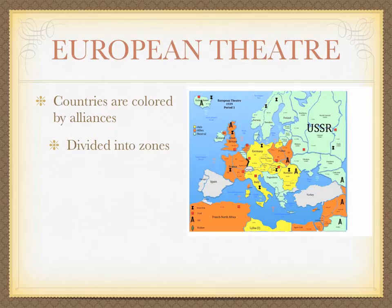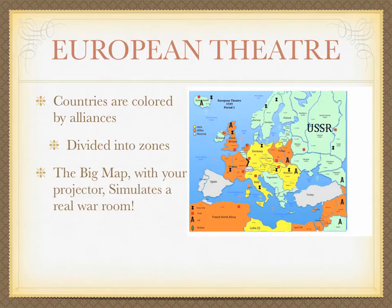The seas and oceans are divided into zones to create a more realistic time frame for sea movement and transport of troops. Each land zone and country are separate objects that enable you to change their color on the map, denoting a change in ownership or a change in alliance.